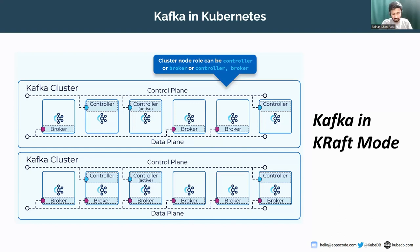In KRaft mode, the Kafka cluster can run in dedicated or shared mode. In dedicated mode, some nodes have their process roles set to controller only, and the rest are set to broker only. In shared mode, some nodes have process roles set to both controller and broker. Which approach to use depends on the size of your cluster. The brokers serving as controllers are listed in the controller.quorum.voters configuration property set on each broker.